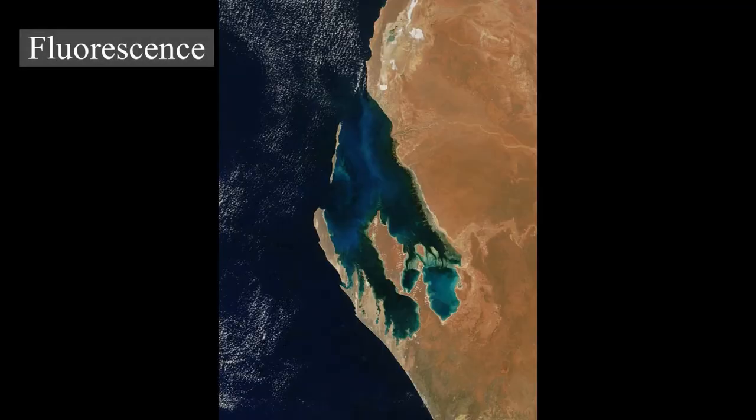A few sharks appear fluorescent under blue light, such as the swell shark and the chain catshark, where the fluorophore derives from a metabolite of kynurenic acid.